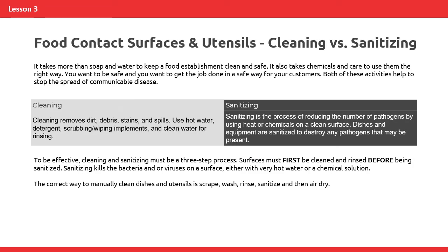Food contact surfaces and utensils: Cleaning vs. Sanitizing. It takes more than soap and water to keep a food establishment clean and safe. It also takes chemicals and care to use them the right way. Both of these activities help to stop the spread of communicable disease. Cleaning removes dirt, debris, stains, and spills. Use hot water, detergent, scrubbing or wiping implements, and clean water for rinsing.